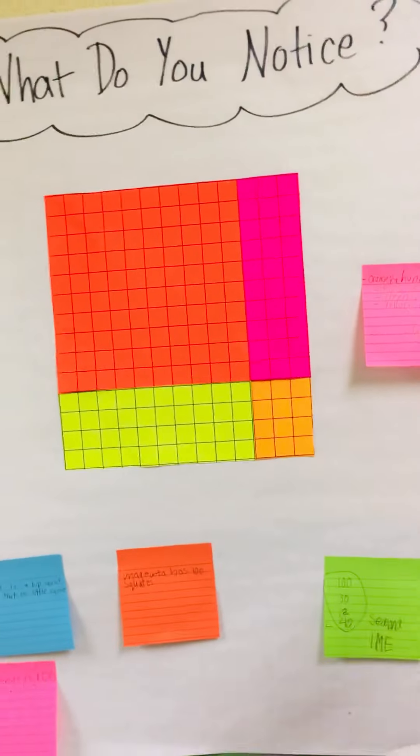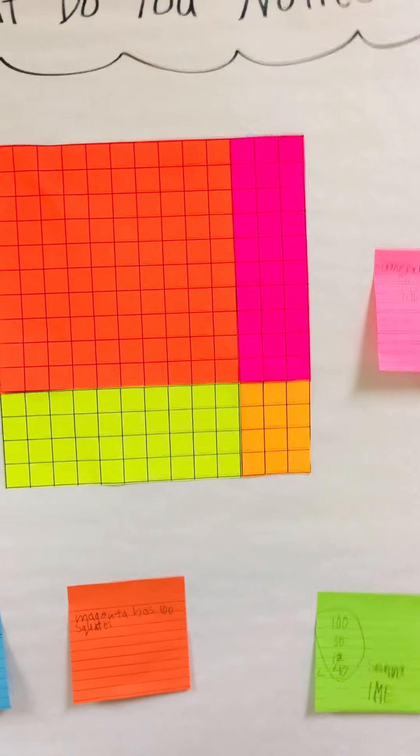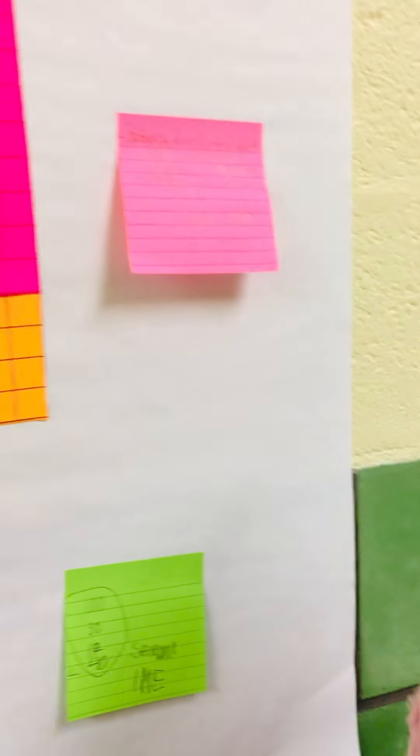What do you notice here? That the big red box is 100, the pink box is 30. Right.